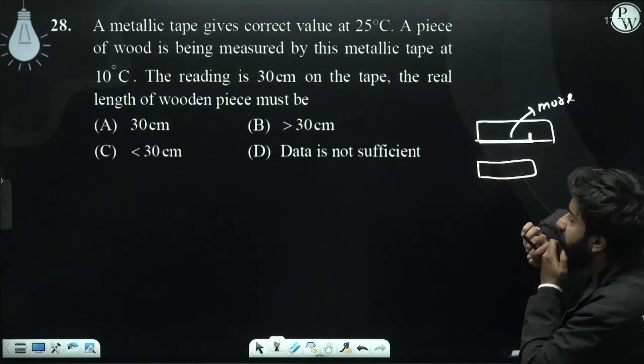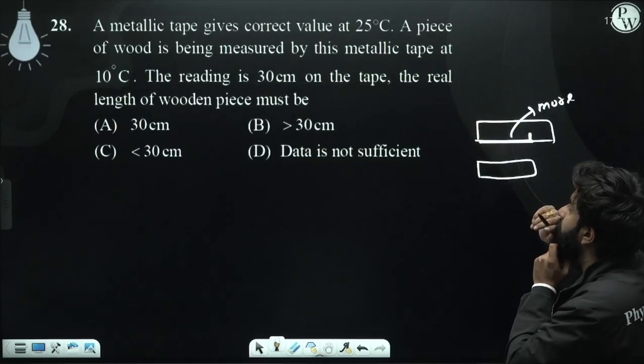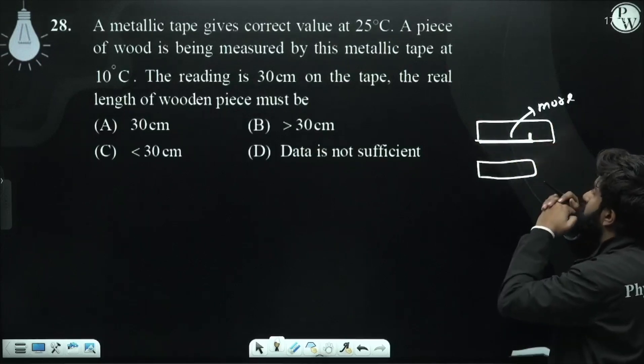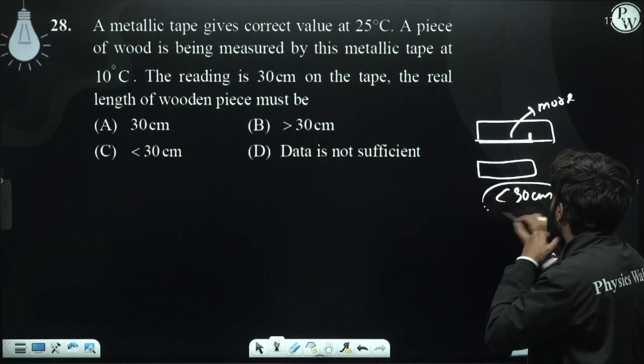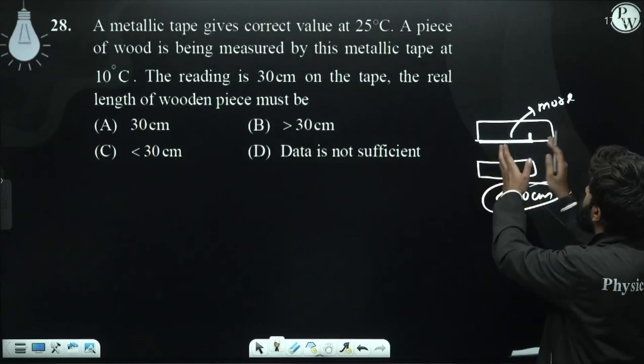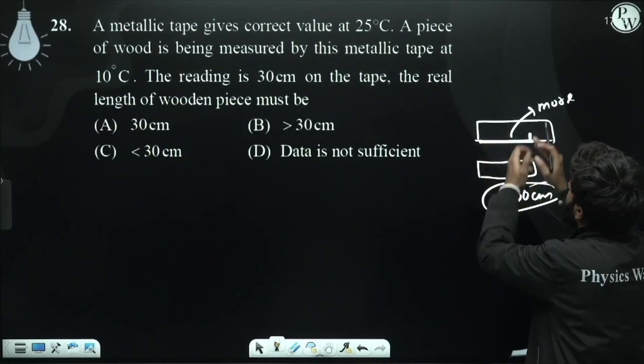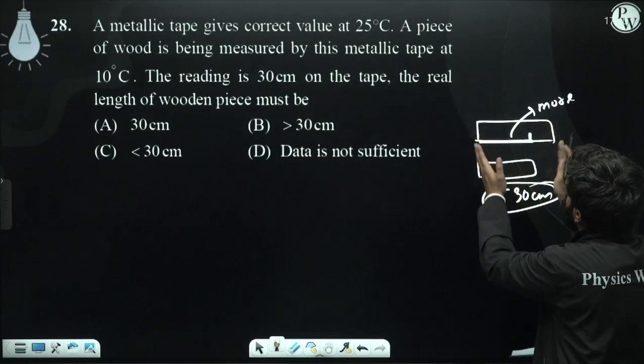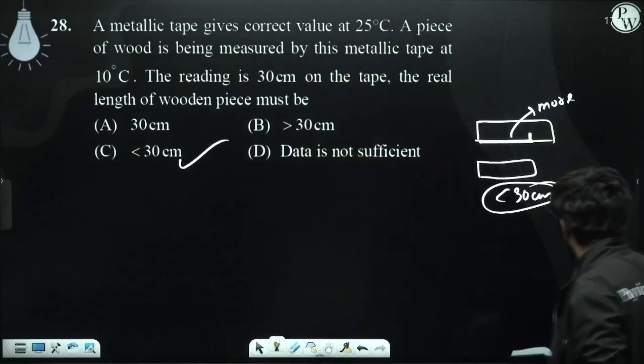The reading will be more and the actual reading will not be at 25 degrees. So the actual length will not be 30 cm because the reading will be more when the tape is compressed and the divisions are passed closer together. If the temperature is higher, then the answer will be less than 30 cm.